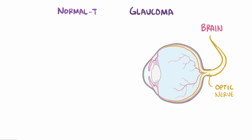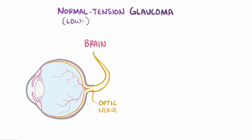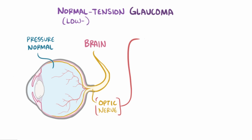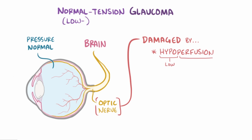Finally, normal tension glaucoma or low tension glaucoma happens when the pressure is normal in the eye. The cause of normal tension glaucoma is largely unknown, although it's thought that the optic nerve becomes damaged due to hypoperfusion or poor blood flow, as well as potentially genetic hypersensitivity to pressures that are even in the normal range.